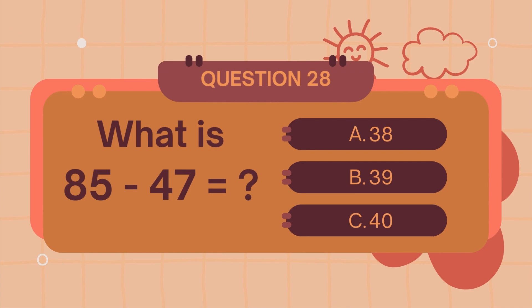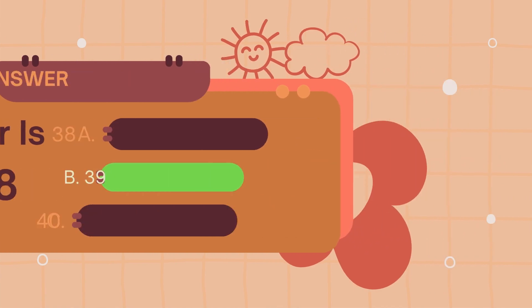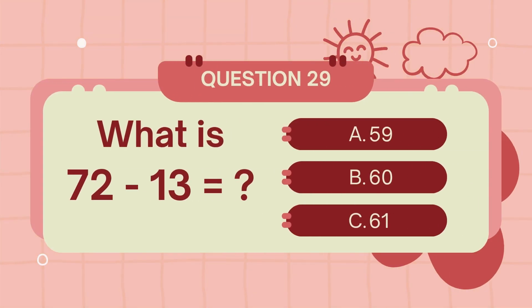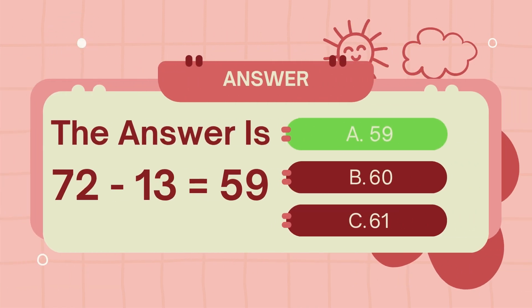What is eighty-five minus forty-seven? The answer is thirty-eight. What is seventy-two minus thirty-eight? The answer is forty-five.